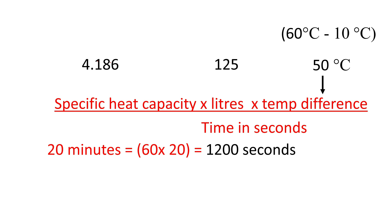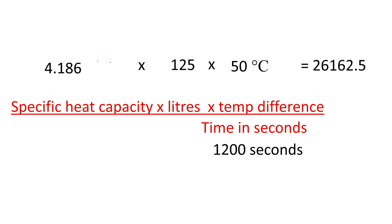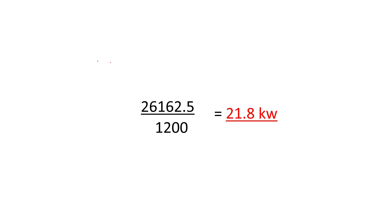Let's work out the top line, then divide this by 1200. The answer is 21.8 kilowatts — that is what size boiler is needed. Make sure your coil rating in a cylinder and pipework is no less than this size.